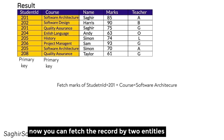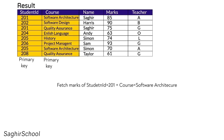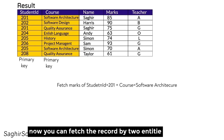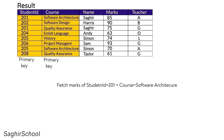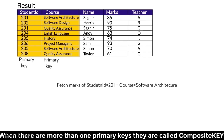So we make Course an additional primary key column. Now we can uniquely identify a record: give us the result of Student ID 201 in Quality Assurance, or Student ID 205 in History. Student ID was already a primary key and now Course is also a primary key. When there are multiple primary key columns, they are collectively called a composite key.